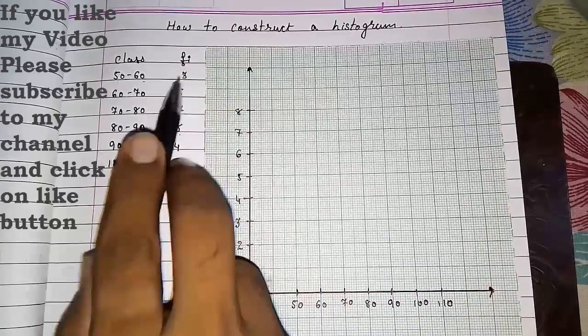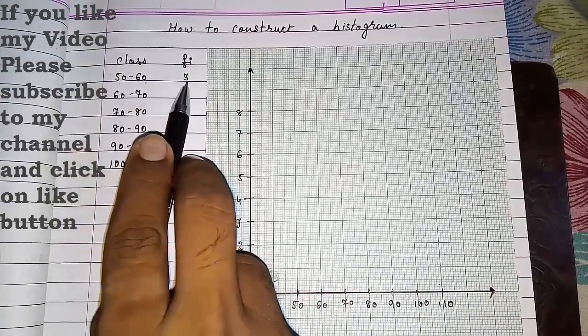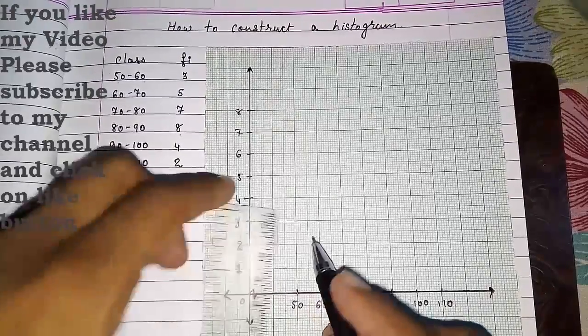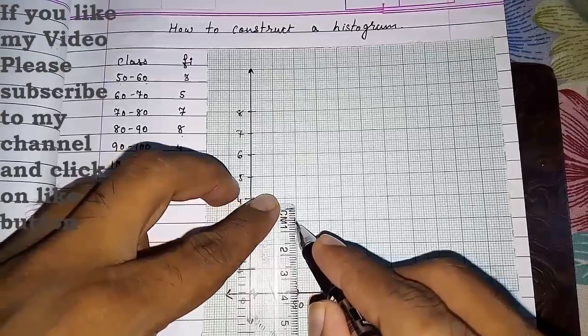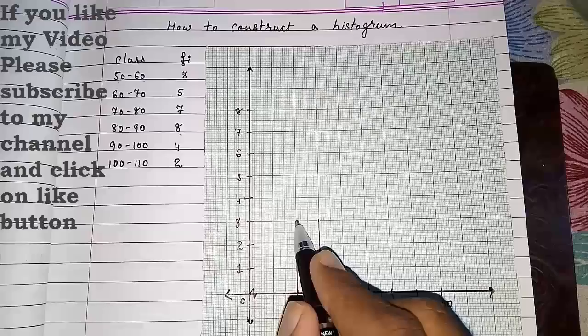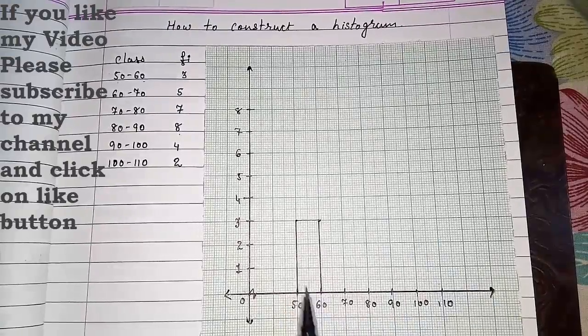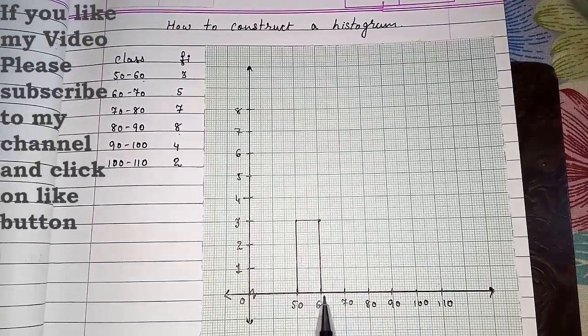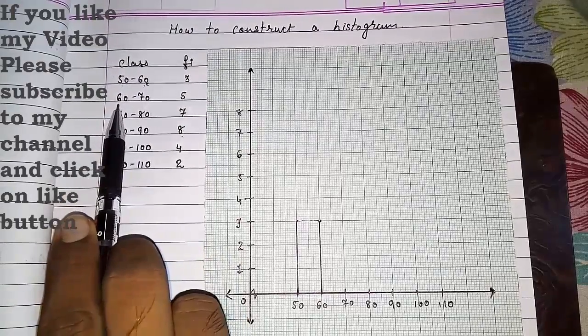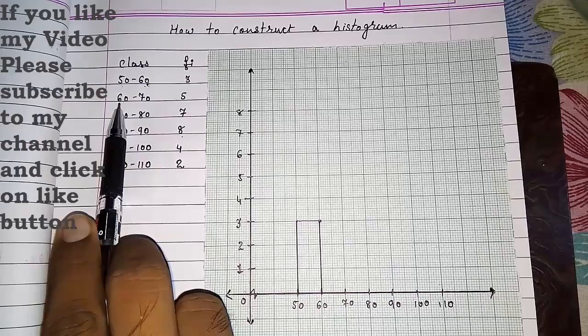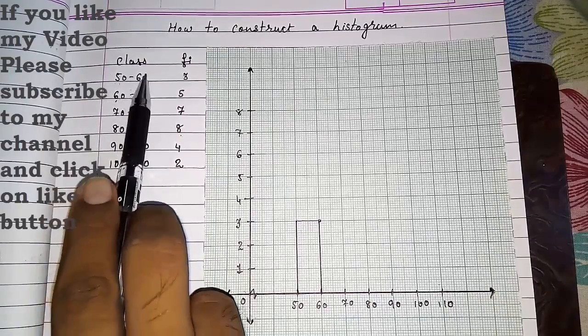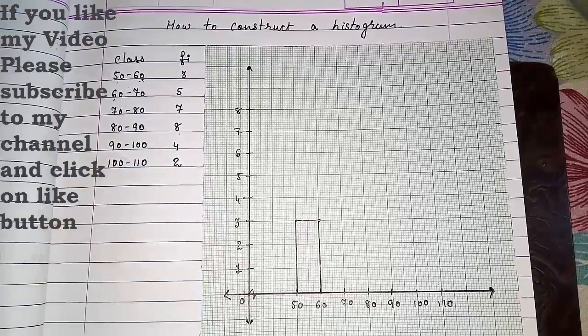Now from the first, we have 50 to 60 which gives you 3. So we will draw with the help of scale. Up to 3 we have done this. Now I will join this. This is our first bar. Now the first class ending will be the starting point of the second bar. I told you previously also that the classes should be continuous. If they are not continuous then we have to make them continuous.